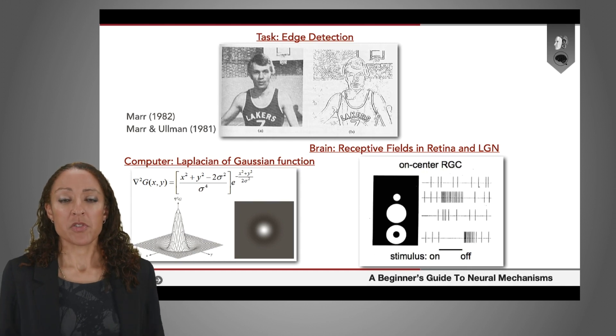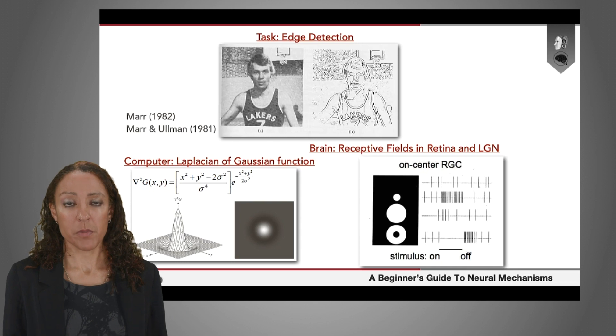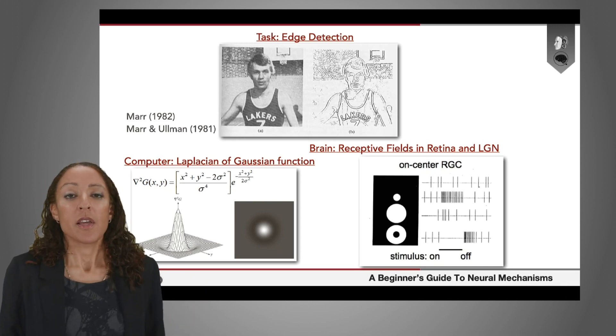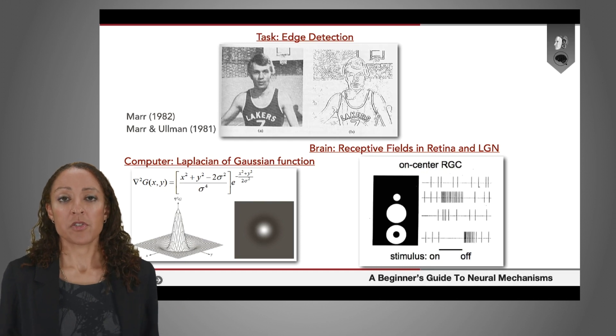But not only was this just a mathematical representation of this physiological response, he was also arguing that the computation itself described mathematically with this function is a way to perform the same task that the early visual system is doing. So if you take the task of edge detection,